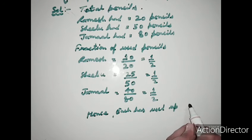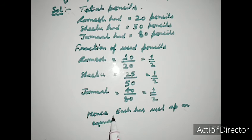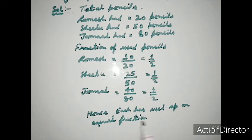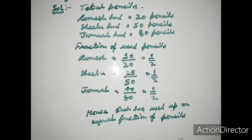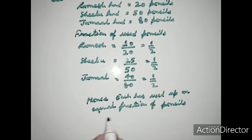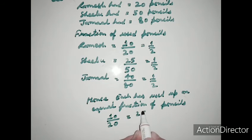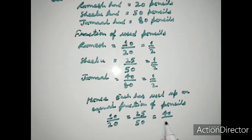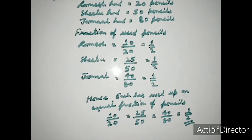Hence, each person has used up an equal fraction of their pencils. That is: 10 upon 20 equals 25 upon 50 equals 40 upon 80 equals 1 upon 2.